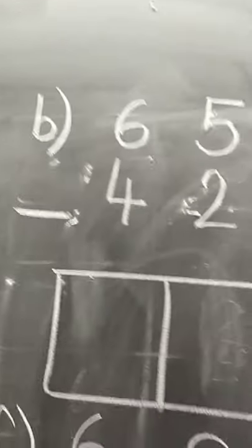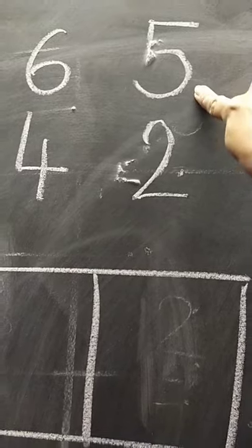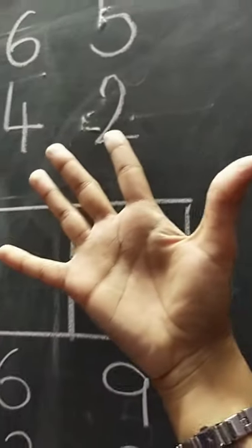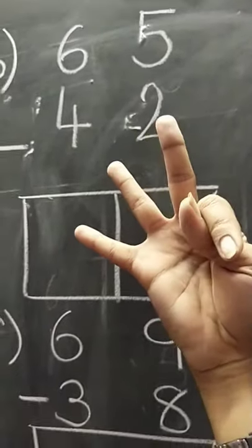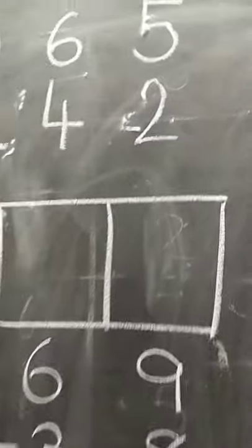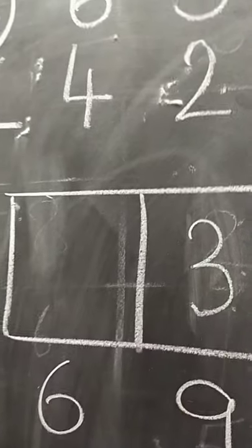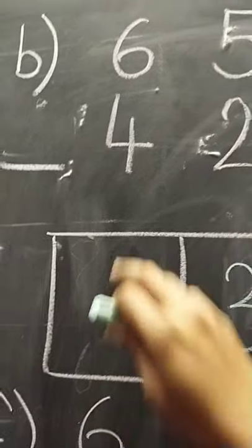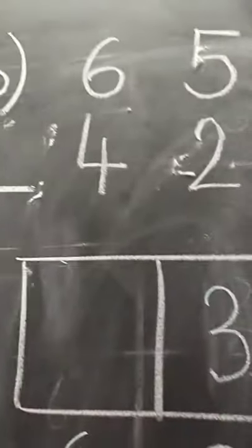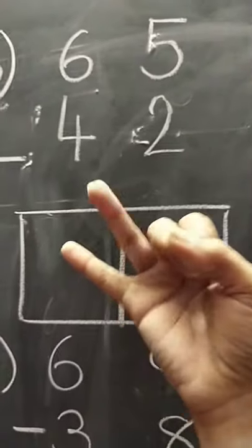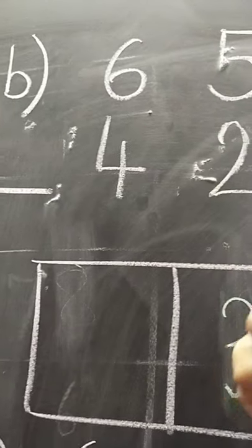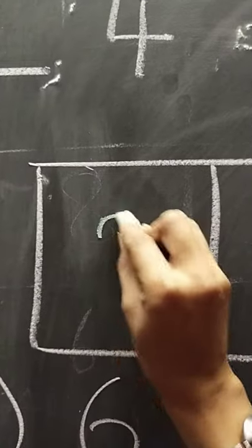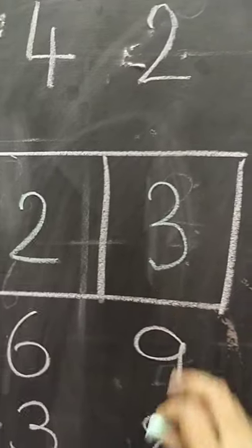Next, B. Here we have 5 and after that we have to subtract 2. So, 5 minus 2 — we are left with 3. Then, here we have 6 and out of 6 we have to subtract 4. After 4 we count: 4, 5 and 6. So, 6 minus 4 will be 2. Here the answer will be 23.